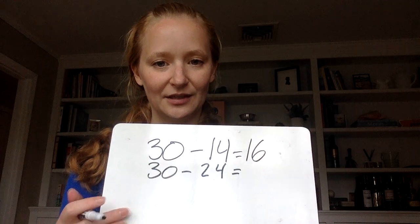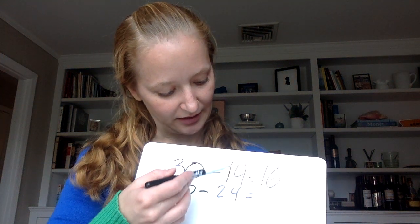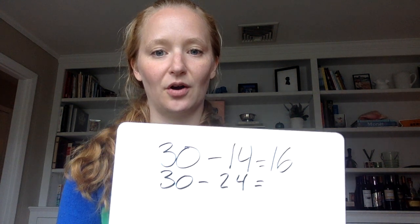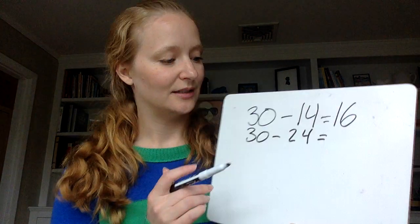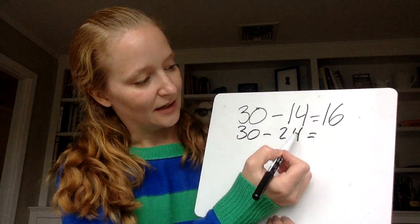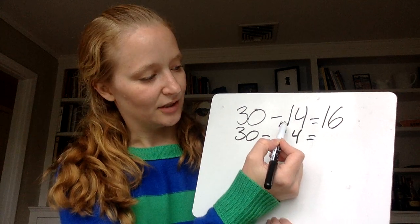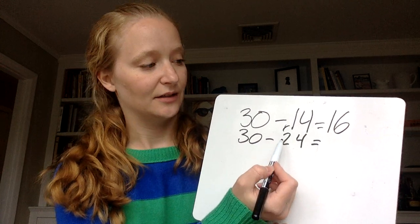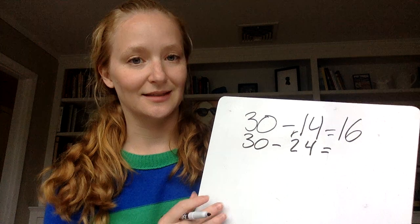Okay, so I know that 14 and 24 are a distance of 10 away. I'm seeing that my 4s are the same in the ones place. What's changing is my tens place. It's going from 10 to 20. So I know that that difference is 10.